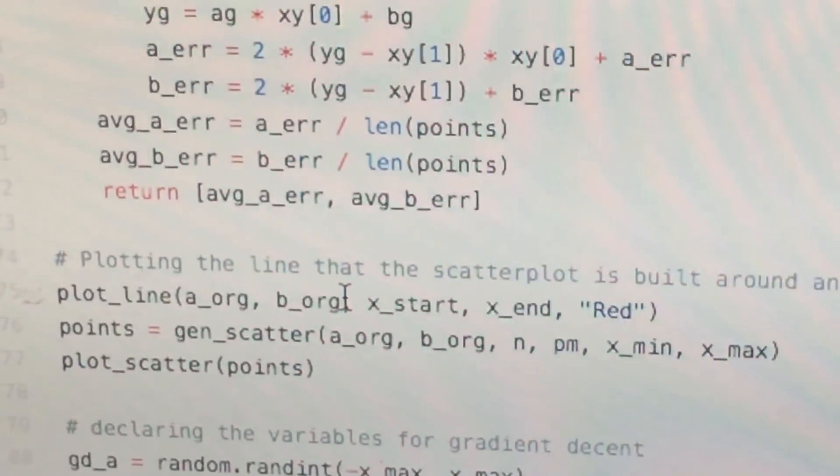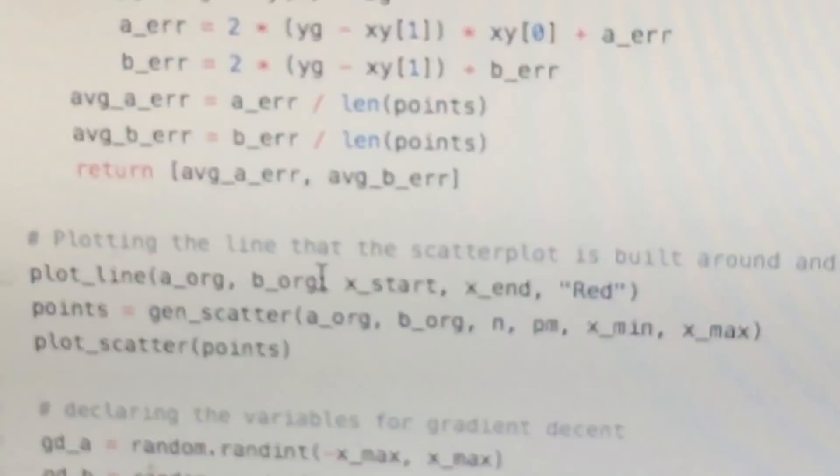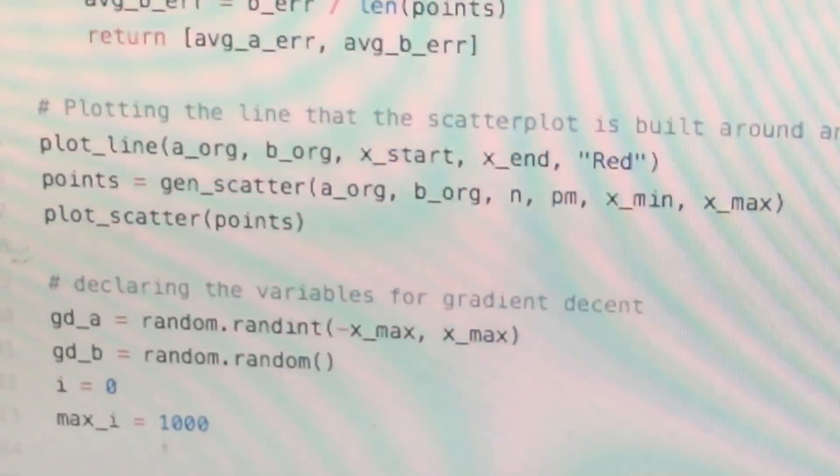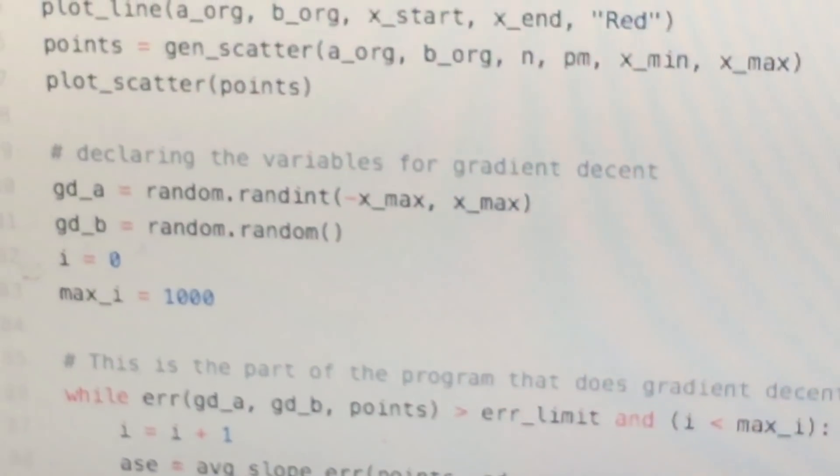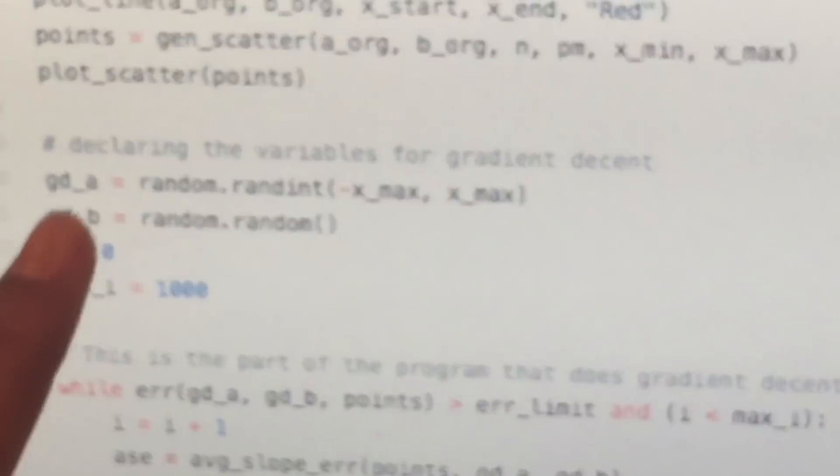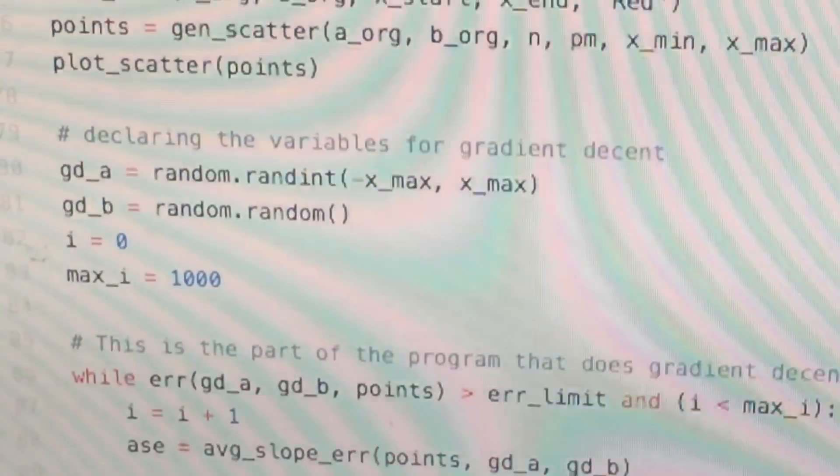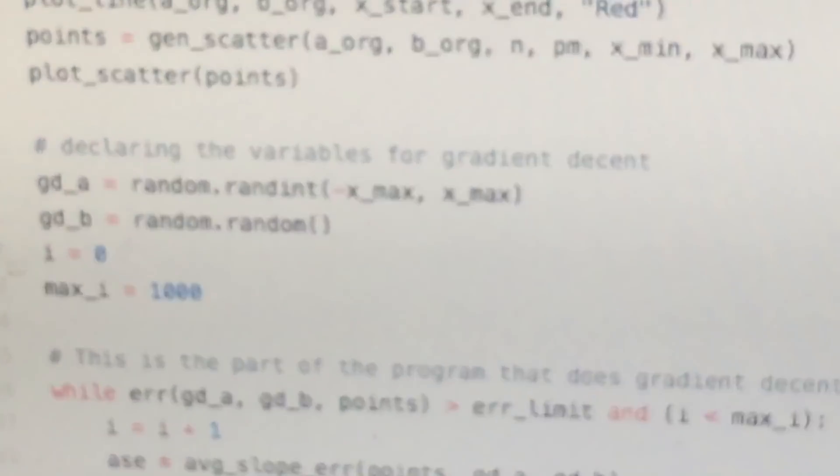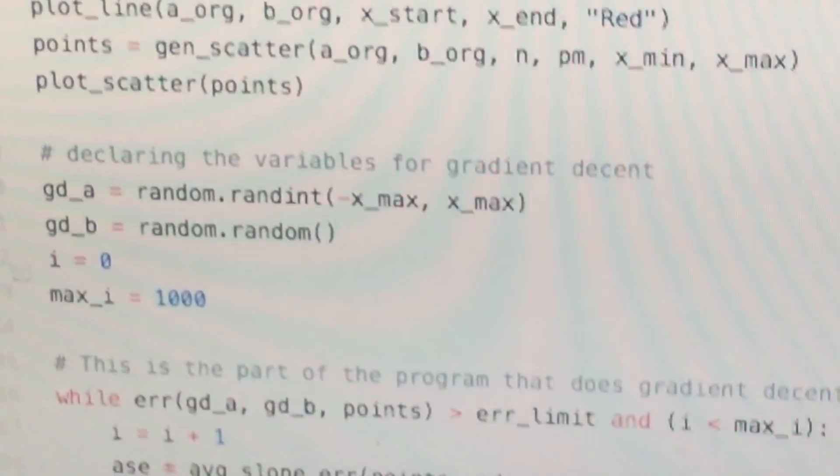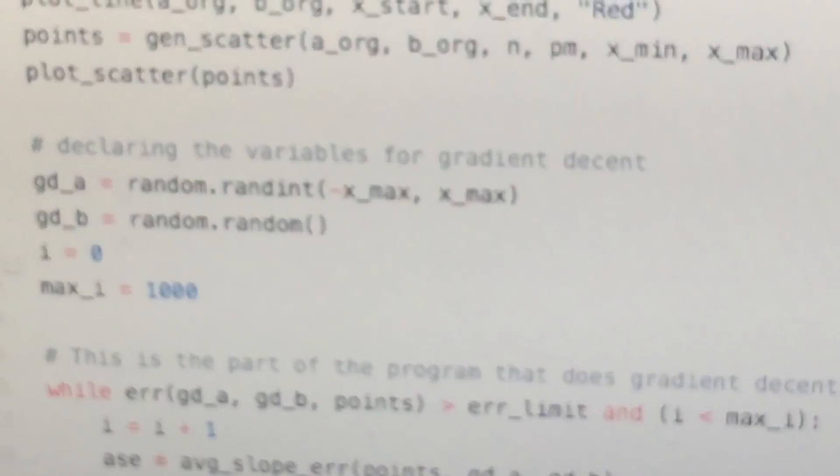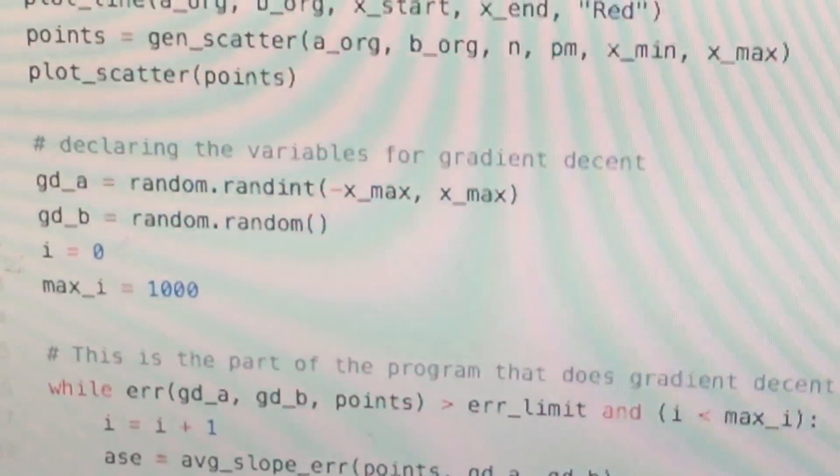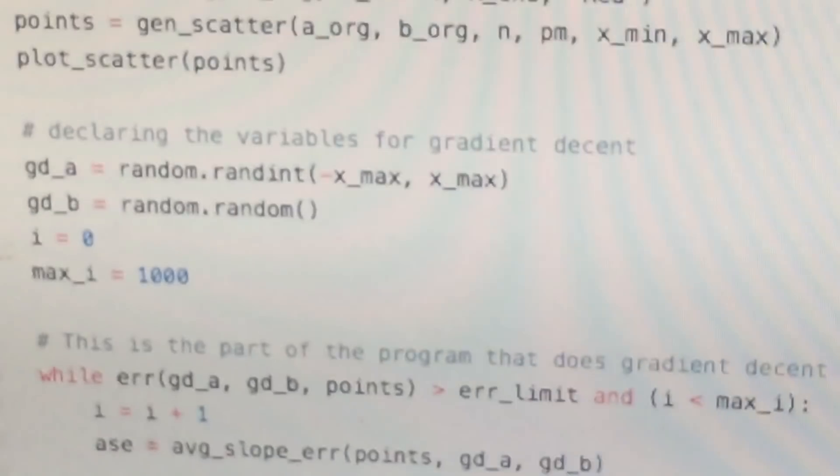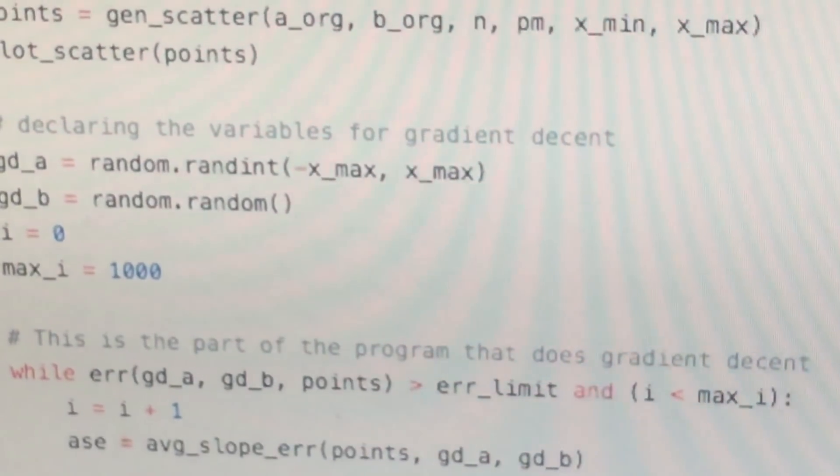Now I'm clearing the variables for gradient descent - gd_a and gd_b. And i is the number of iterations that this calculates, and max_i is the max iterations which I put at a thousand.